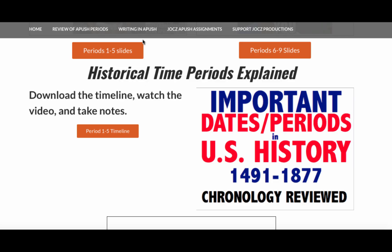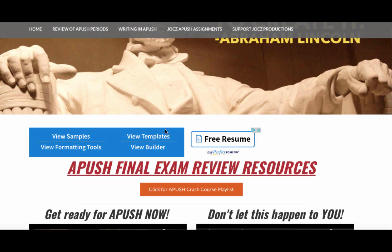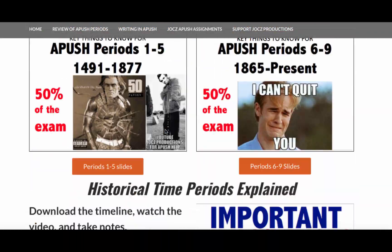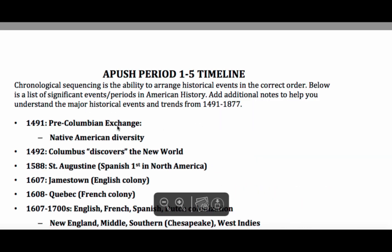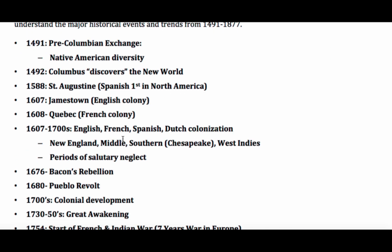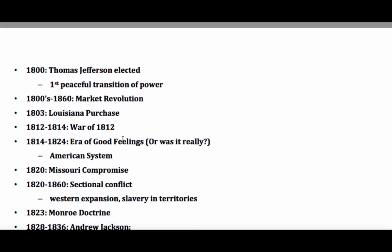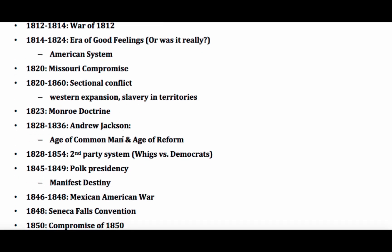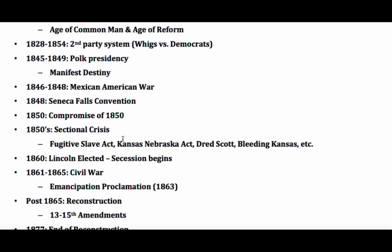Make sure you check out apushexplained.com. If you scroll to the bottom of the page in the Review section, you'll come across all sorts of helpful information, including the Period 1 to 5 timeline — all the stuff you just saw, broken down for you. Print it, add some annotations, and just know these time periods and dates. These are the core ones — know these and you should be good for periods 1 through 5. If the video helped you out, click like, post any comments, and have a beautiful day. Peace.